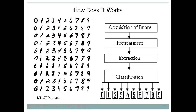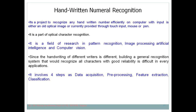To summarize, OCR covers both text and numbers, but handwritten numeral recognition is a specialized field that focuses only on numbers. We have discussed what handwritten numeral recognition is, how it works, and its various applications. I hope you understand how handwritten numeral recognition works. Thank you.